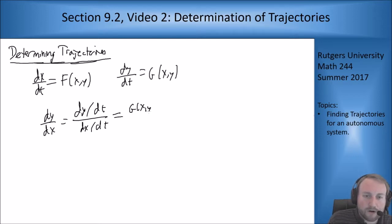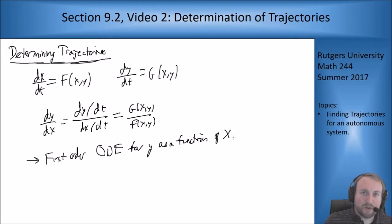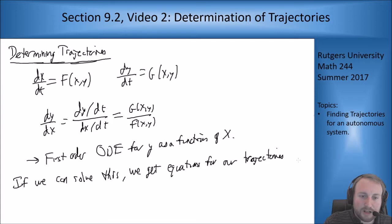I know what these two things are on the top and bottom. This is g divided by f, and this is a first order ODE for y as a function of x. So if we can solve this, we get equations for our trajectories.